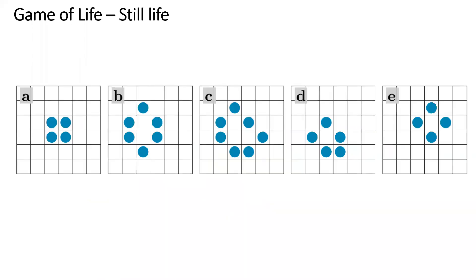The least interesting category is still life. All the alive cells have three alive neighbors, which means they will continue to live. And all the dead cells have none with three alive neighbors, which means they will never become alive — so it's very boring, it will continue to be like this. Some dead cells outside have five alive neighbors, so they can't become alive, and all alive cells have exactly two alive neighbors, so they continue to live.